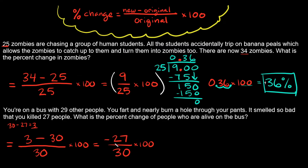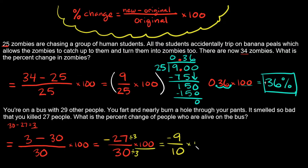Can we simplify this fraction? We actually can, because we can divide the top and the bottom by 3 — both numbers are divisible by 3. So this reduces: negative 27 divided by 3 is negative 9, and 30 divided by 3 is 10. So we now have negative 9 over 10, times 100.